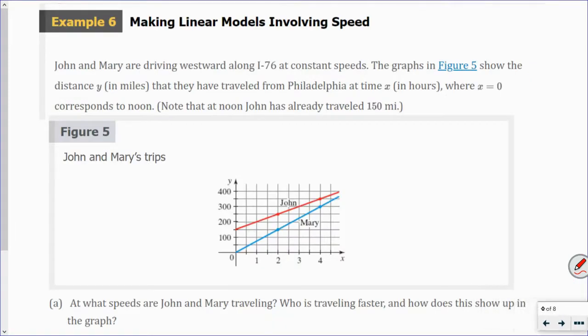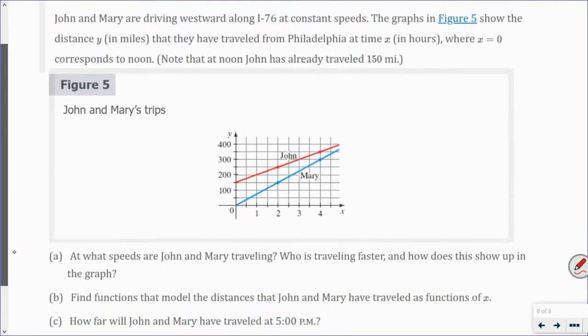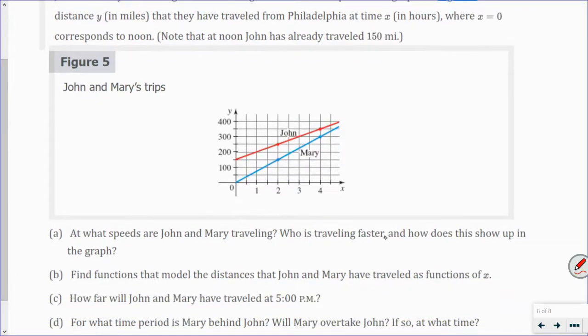Okay, last one here. So, John and Mary are driving westward along I-76 at constant speeds. The graphs in figure 5 show the distance y in miles that they have traveled from Philadelphia at time x in hours. Where x equals 0 corresponds to noon. Note that at noon, John had already traveled 150 miles. Okay, so Mary started at noon. So, Mary started at noon. John was already going. At what speeds are John and Mary traveling? Who's traveling faster? And how does this show up on the graph? Okay, so looking at it, we know that Mary is traveling faster. Because she has a steeper slope.